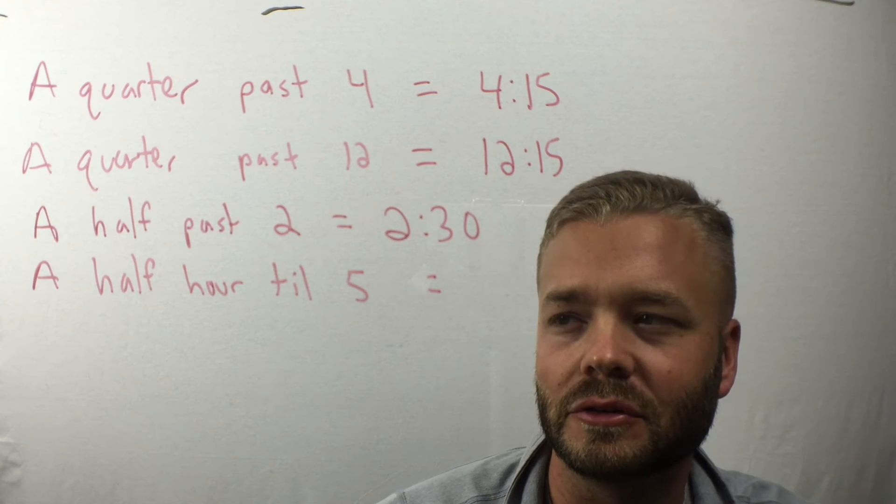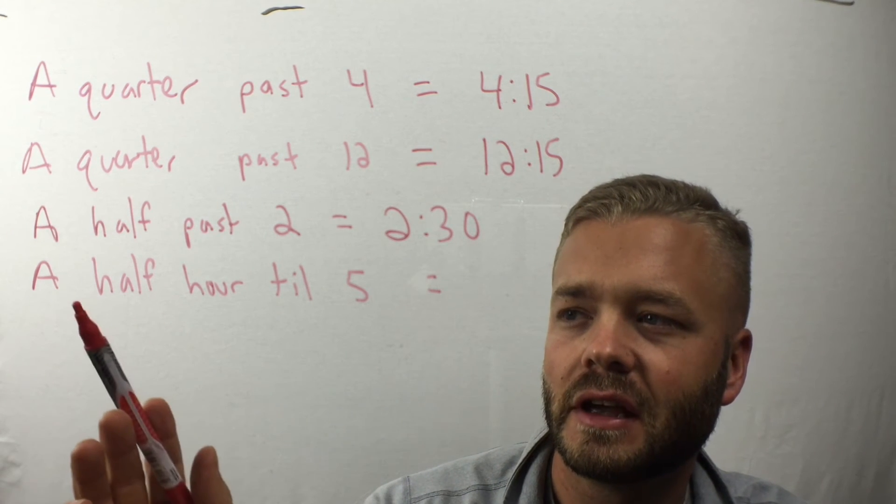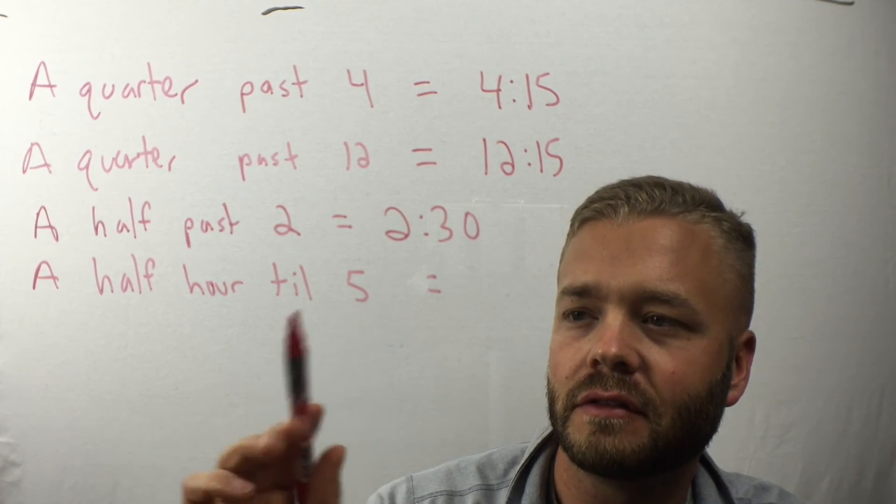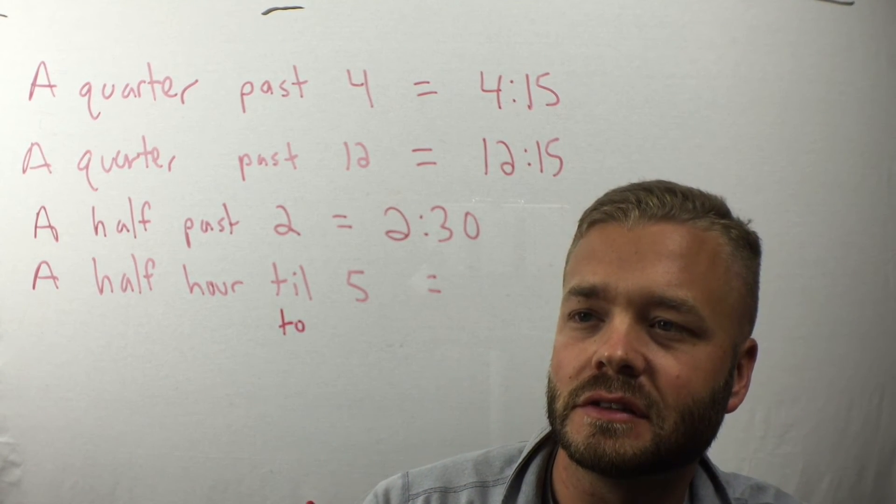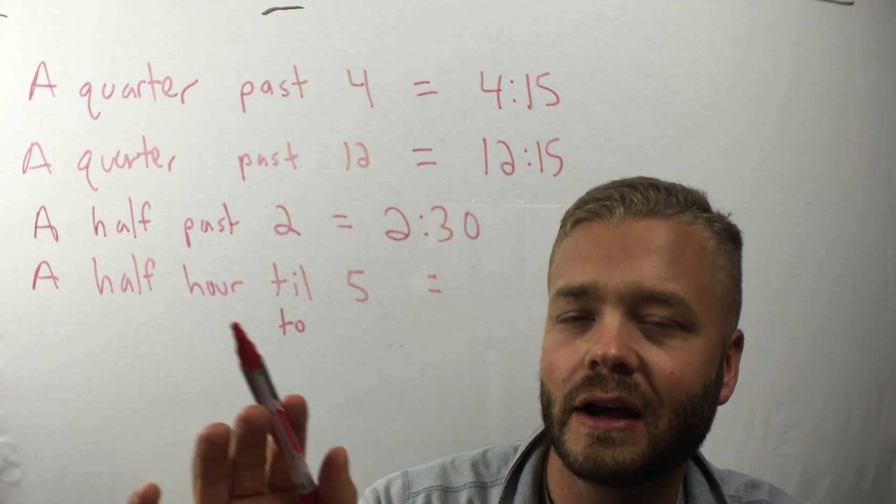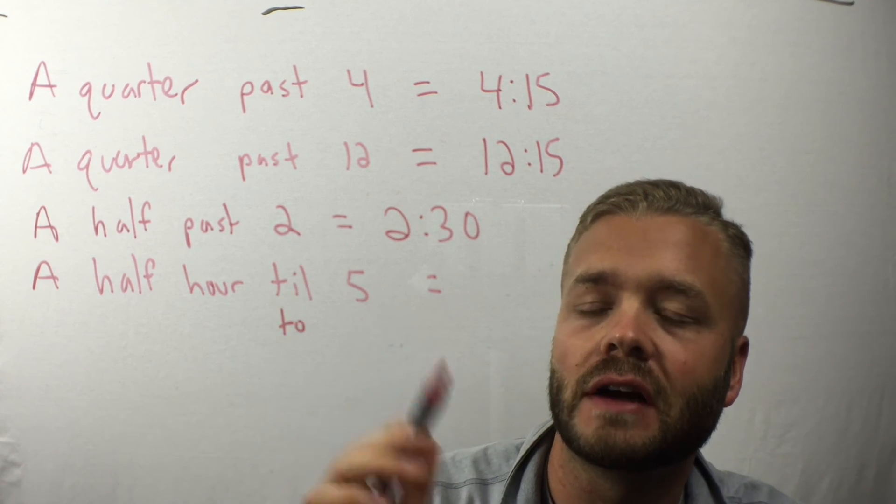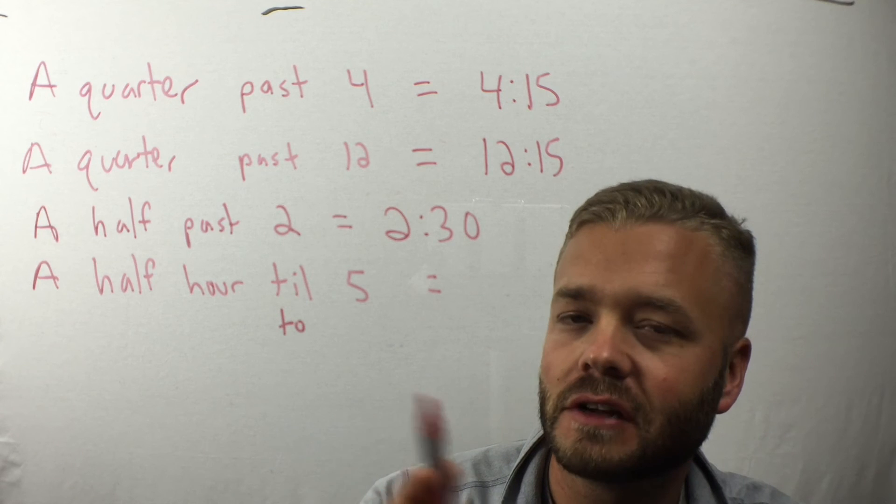Now it's going to get a little more difficult. You might hear someone say a half hour till five. Another word to say that is a half hour to five. What that means is you've got a half an hour to go until it is five o'clock. So it's not five o'clock yet. It's still four.